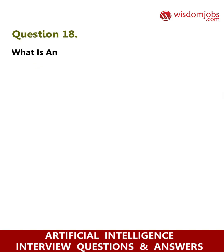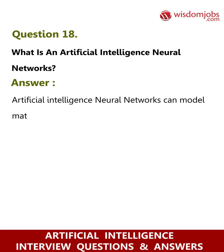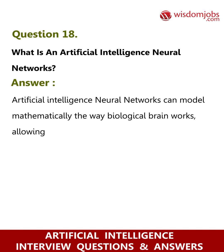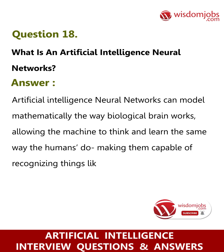Question 18: What is an artificial intelligence neural network? Answer: Artificial intelligence neural networks can model mathematically the way the biological brain works, allowing the machine to think and learn the same way humans do, making them capable of recognizing things like speech, objects, and animals like we do.